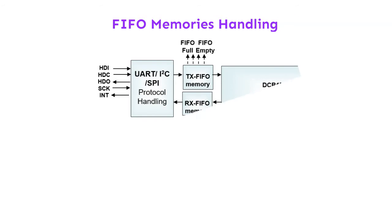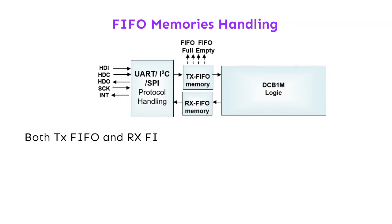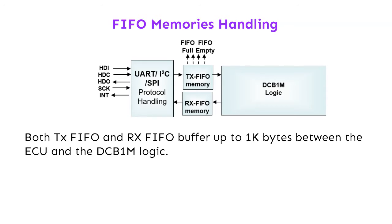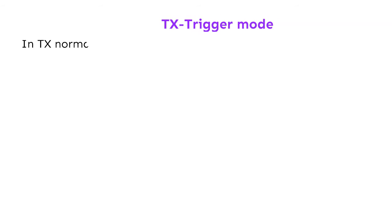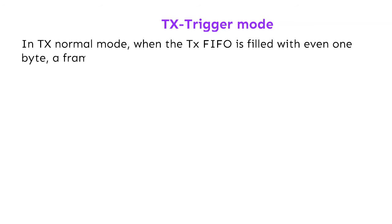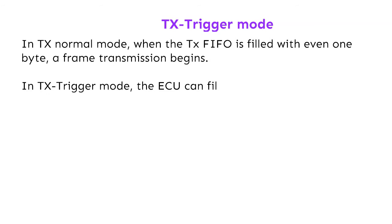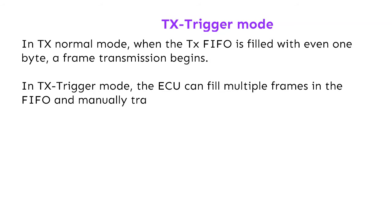FIFO handling: both TX-FIFO and RX-FIFO buffer up to 1K bytes between the ECU and the DCB1M logic. Several registers define the FIFO states and related interrupts as described in the datasheet. In TX-Normal mode, when the TX-FIFO is filled with even 1 byte, a frame transmission begins. In TX-Trigger mode, the ECU can fill multiple frames in the FIFO and manually transmit frame by frame over the powerline.